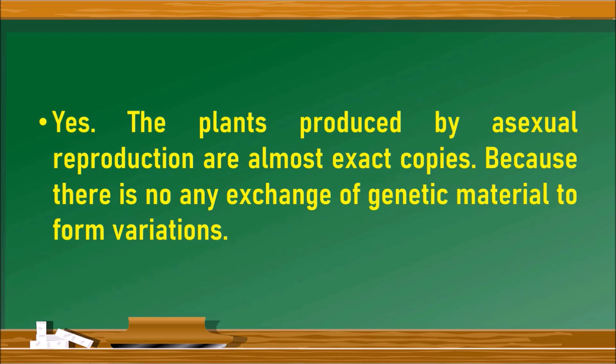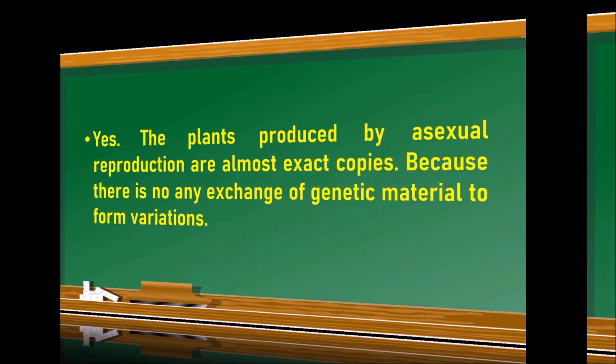If there is exchange of genetic material, then only there is a scope for variations. But in asexual reproduction, there is no exchange of genetic material. So it does not form any variations. The progeny are complete exact copies of the parent.